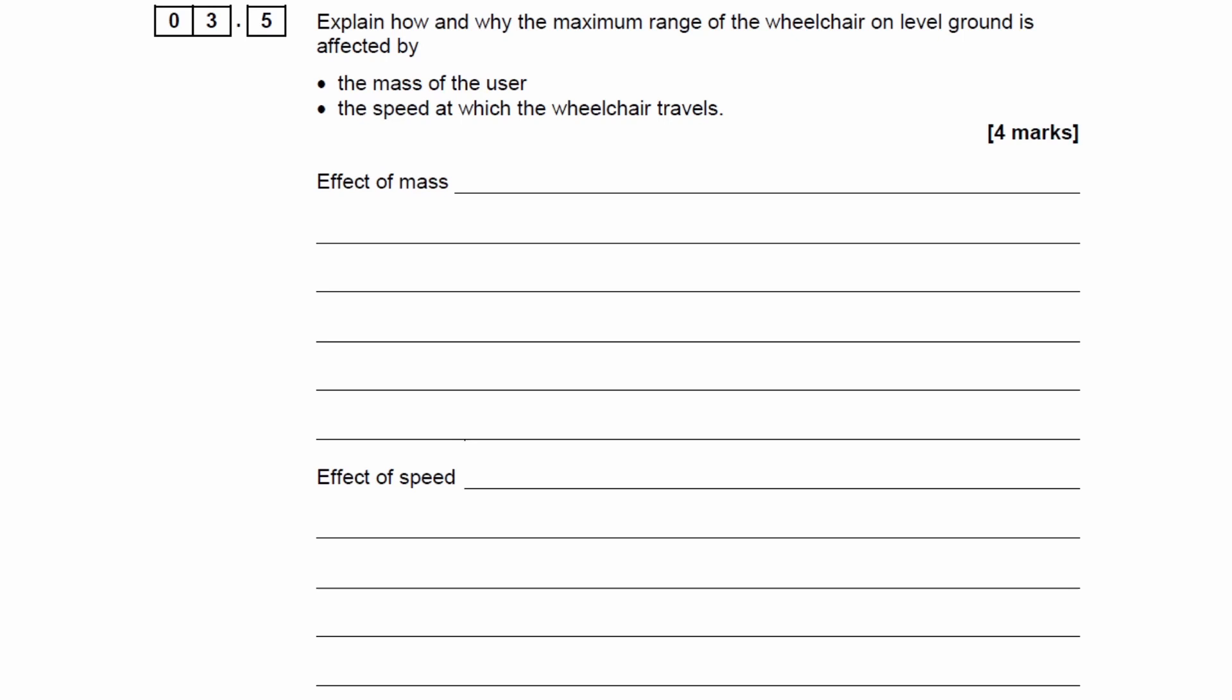Now for the final part of this question. Explain how and why the maximum range of the wheelchair on level ground is affected by the mass of the user and the speed at which the wheelchair travels.